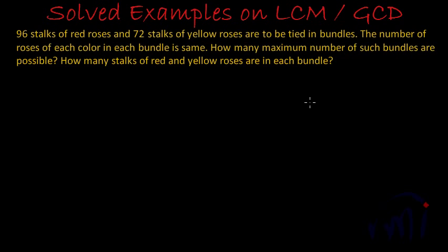Otherwise either we will have few roses which are left over or we will have a shortage of roses. So one thing is very clear: the number of bundles has to be a factor of 96 and 72, but we're trying to make maximum number of such bundles, that means it has to be the greatest common divisor or the greatest common factor of 96 and 72.